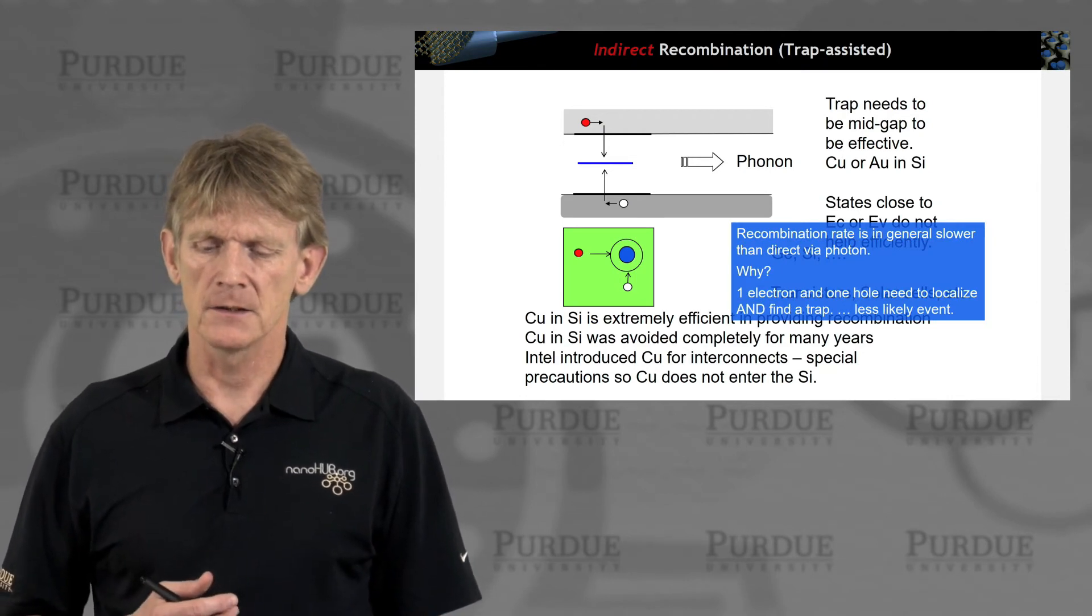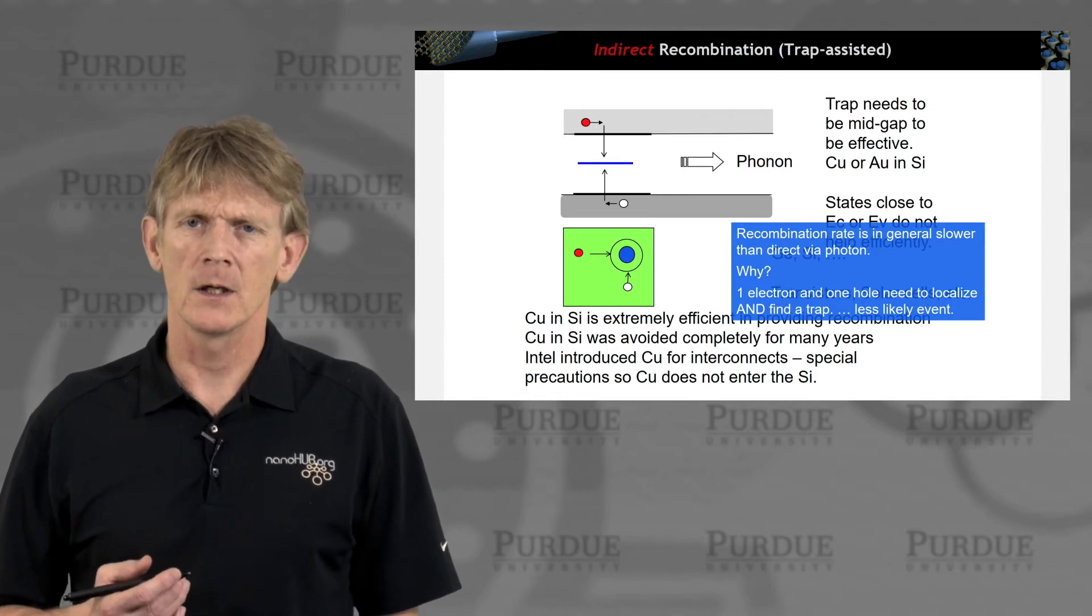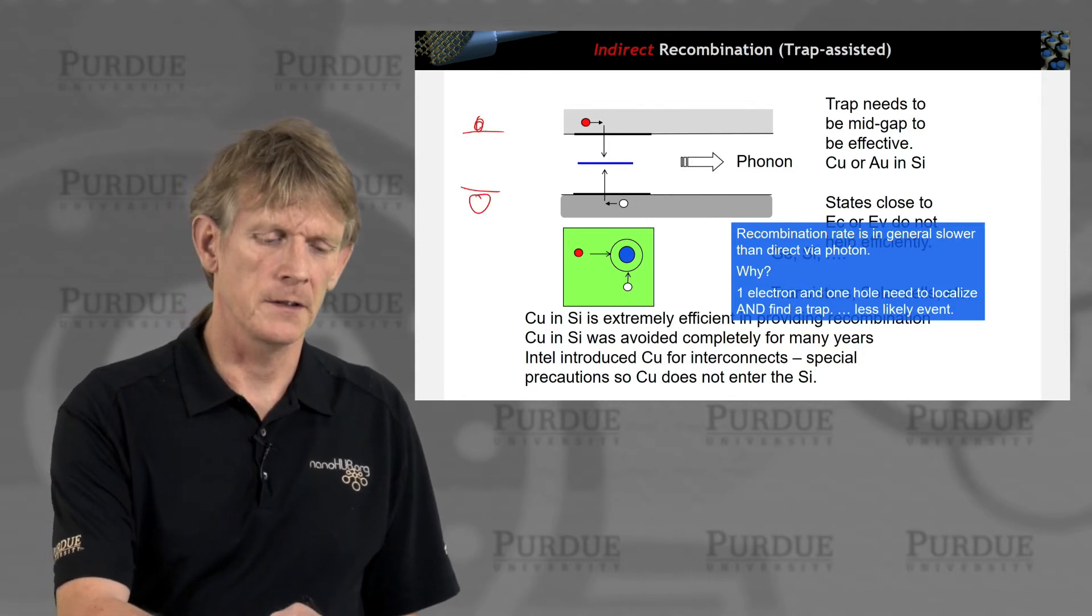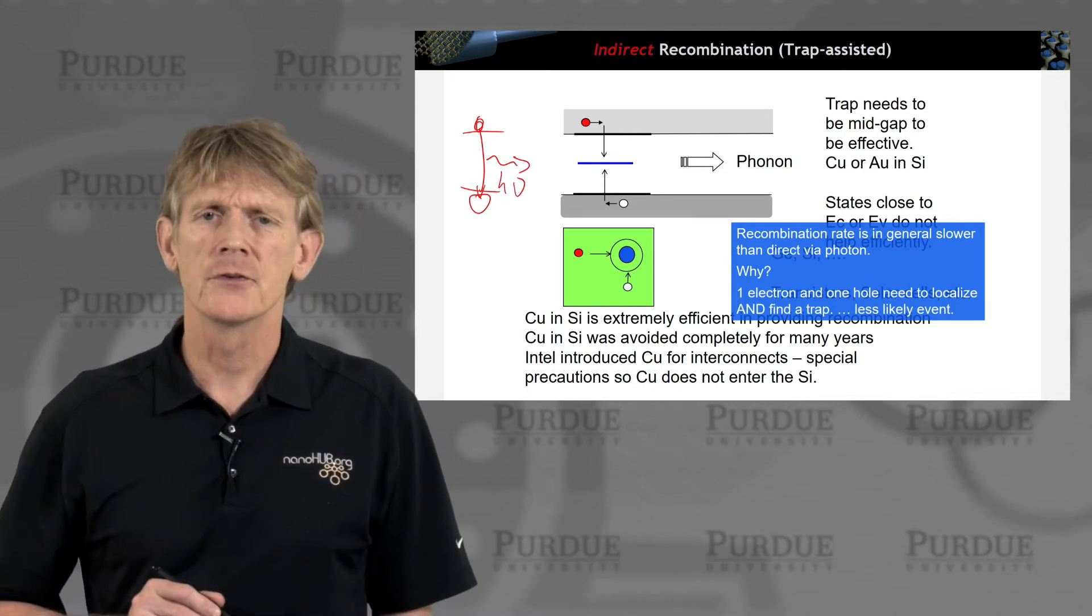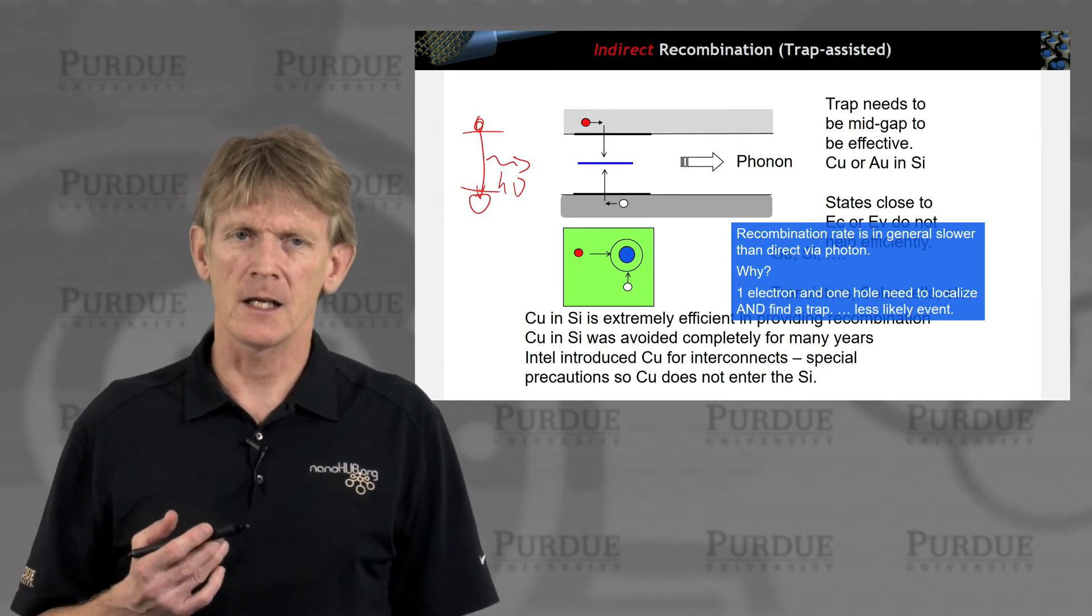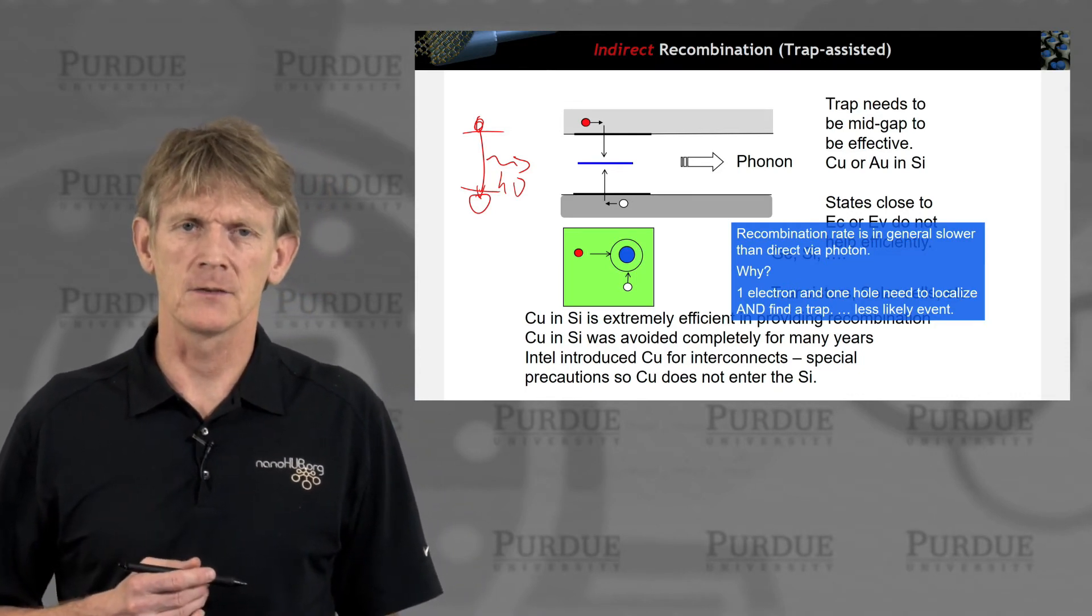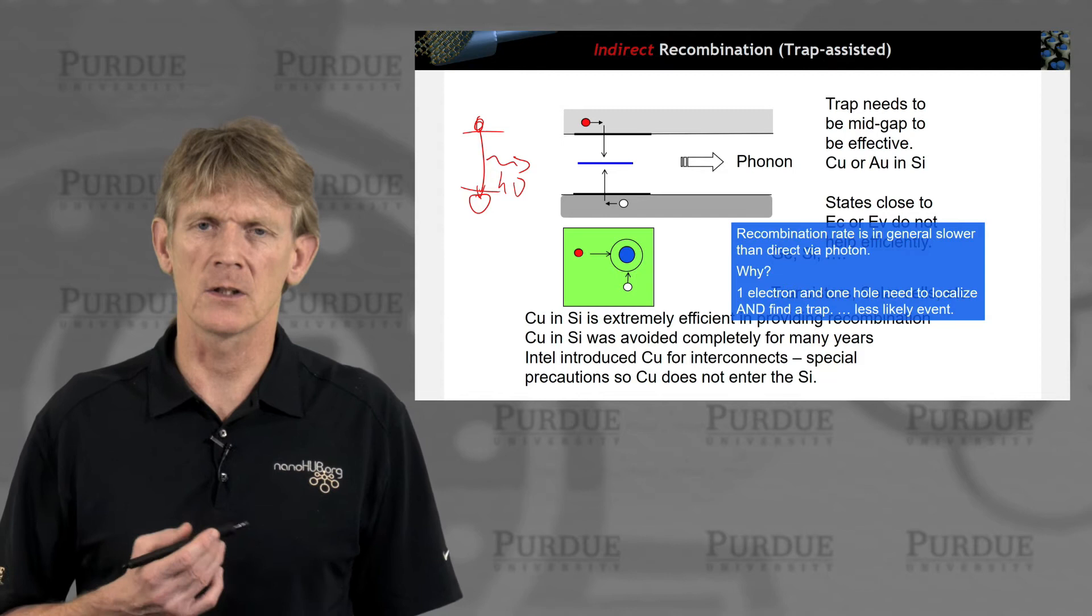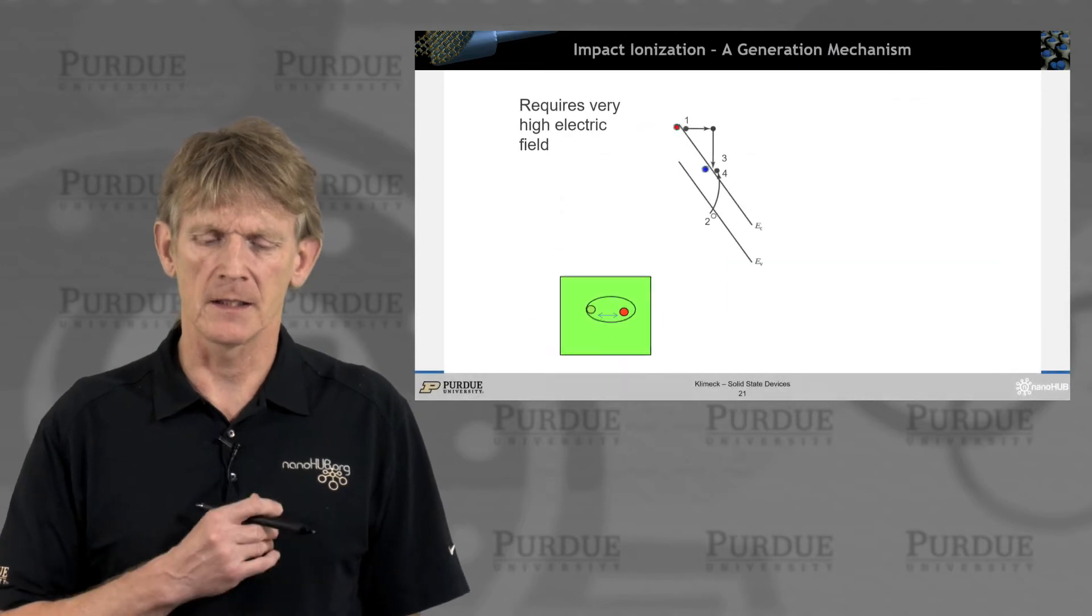Recombination rate is, in general, slower than photon direct recombination. And so why is that? Well, in the direct recombination in a direct material, you have an electron and a hole, and they directly recombine, and a photon comes out. So it involves two different particles. Here, you need to have an electron arrive at an available trap site that is not yet filled, and a hole has to arrive at a filled trap site, and they recombine. So it involves more particles. The rates are overall lower. So it's a less likely event.